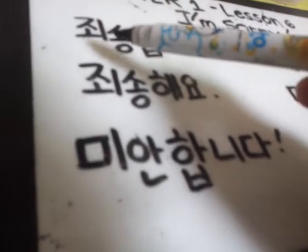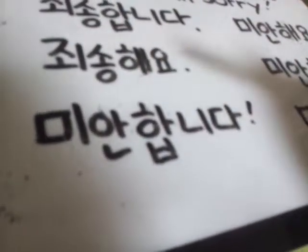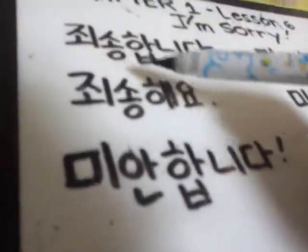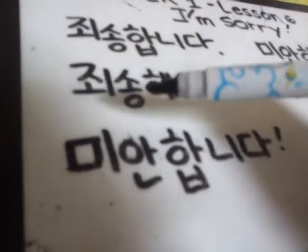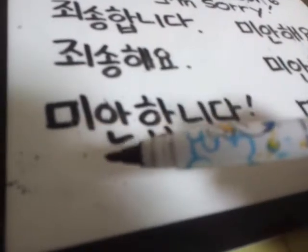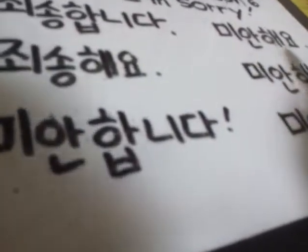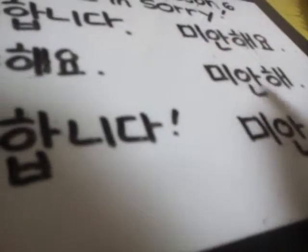So let's repeat the following expressions. The first one is 죄송합니다. This is usually used in public. If you're saying sorry or you feel sorry to someone, you say 죄송합니다. 죄송합니다. 죄송해요. Then the next expression is 미안합니다 and 미안해요. But if you're just talking to your friend, you can say 미안해. Or to a child, you can say 미안.